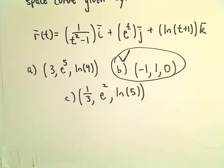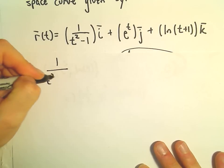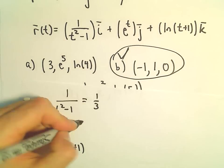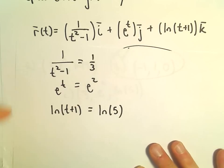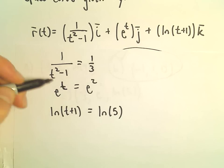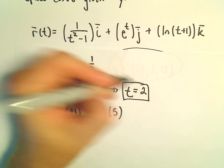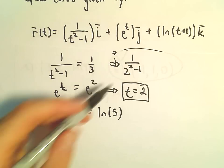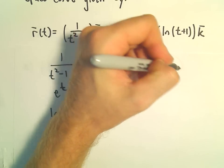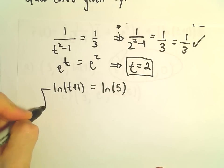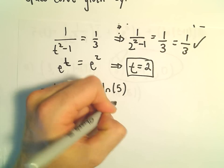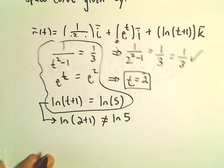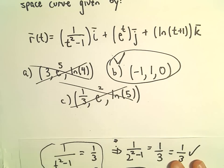We can also check the last option c: 1 over t squared minus 1 set equal to 1/3, e to the t set equal to e squared, and ln(t+1) set equal to ln 5. Is there a value of t satisfying all these simultaneously? t equals 2 would solve the second one. Plugging into the first: 1 over 2 squared minus 1 equals 1 over 3, which works. But plugging t equals 2 into the bottom equation gives ln(2+1) equals ln 3, which is not ln 5. So there's no value of t satisfying all equations simultaneously, meaning that point is also not on the curve. So part b is our solution.